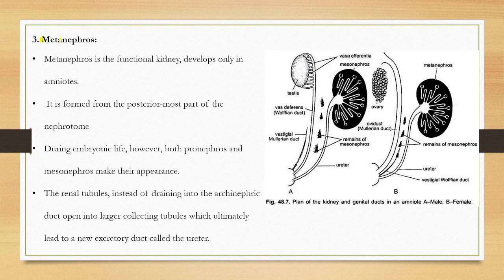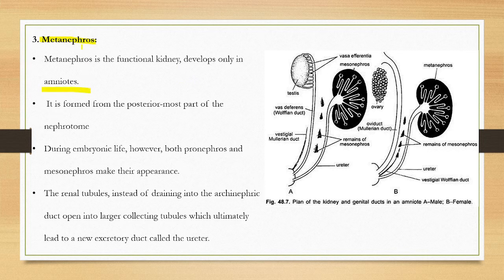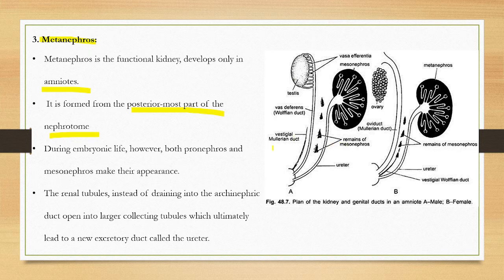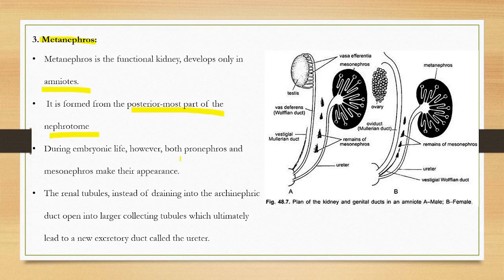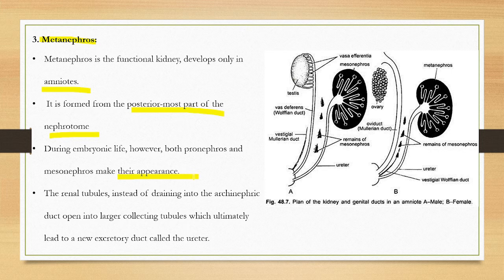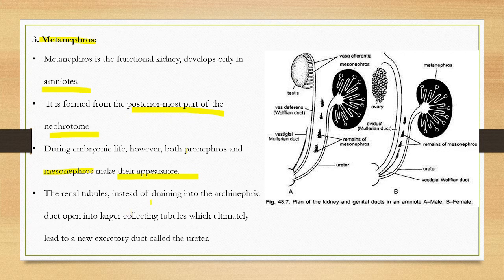The last part is called metanephric kidney. Human kidney is the metanephric kidney. The functional adult kidney develops in annelids, birds, and mammals. It forms from the posterior most part of the nephrotome during embryonic life. However, both pronephros and mesonephros make their appearance and then degenerate. Later the metanephros forms.